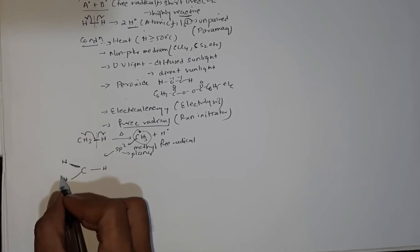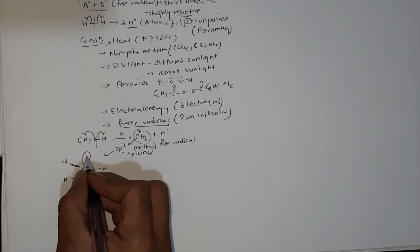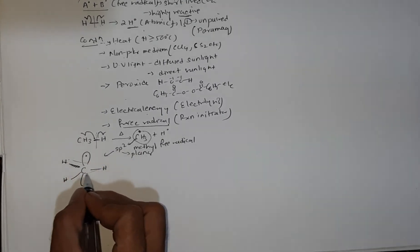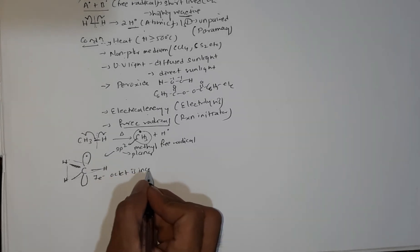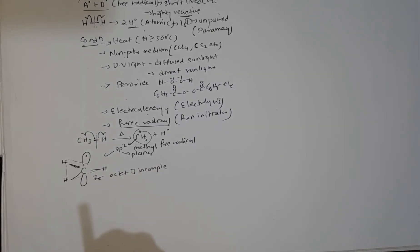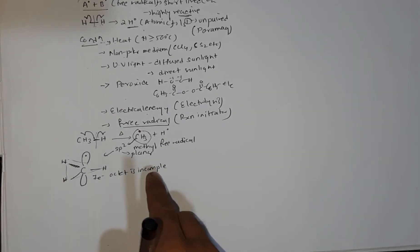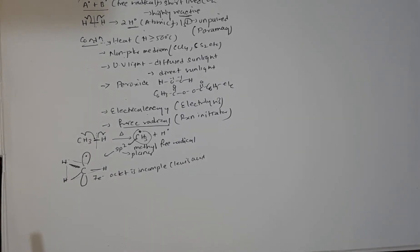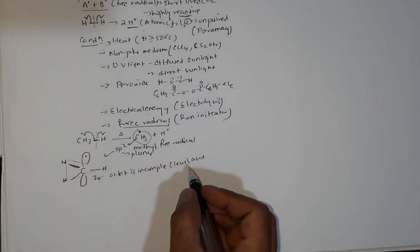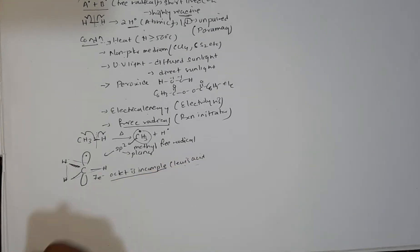If I create a methyl free radical structure, it has carbon with three hydrogens in a plane like a fan with three blades. The p orbital is perpendicular with one electron. So total planar structure. This orbital is perpendicular and if you see properly, the outermost shell has 7 electrons. Seven electrons means octet is incomplete, highly reactive, highly unstable. That's the reason it reacts fast. Octet is incomplete, electron deficient, so it accepts electrons.